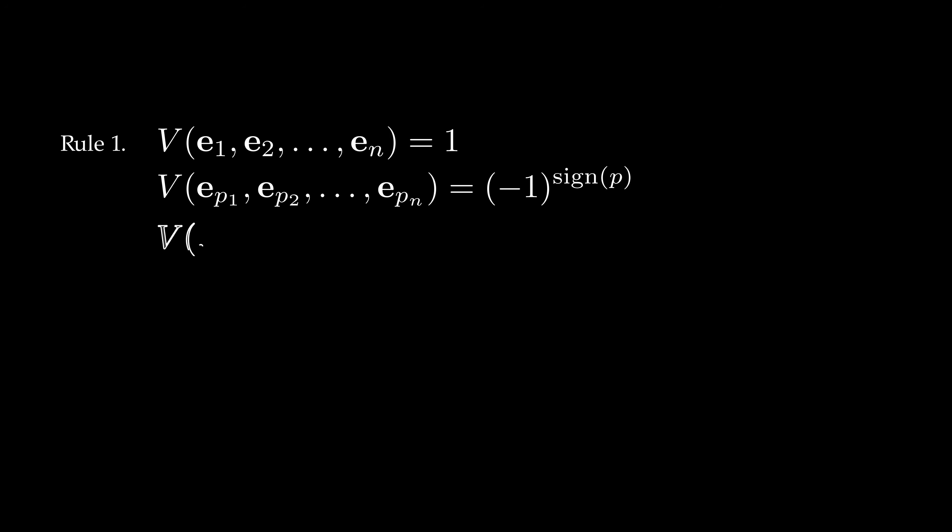If any two slots of V have the same vector, the n-dimensional volume is 0. You can always pull out constants from any slot of V. Adding vectors together in one slot, with all other slots fixed, amounts to adding the corresponding n-dimensional volumes.